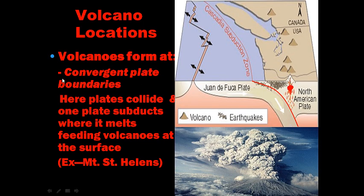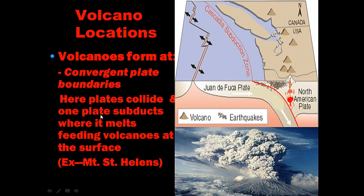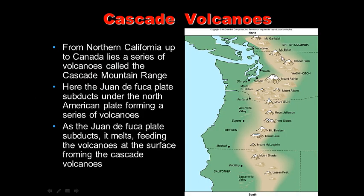Volcanoes also form at convergent plate boundaries. Off the coast of Oregon and Washington, the Juan de Fuca plate is being pushed underneath the North American plate. As it goes down, it melts due to friction and heat, and that melted material rises to form volcanoes. Subducts means one plate is pushed underneath the other.